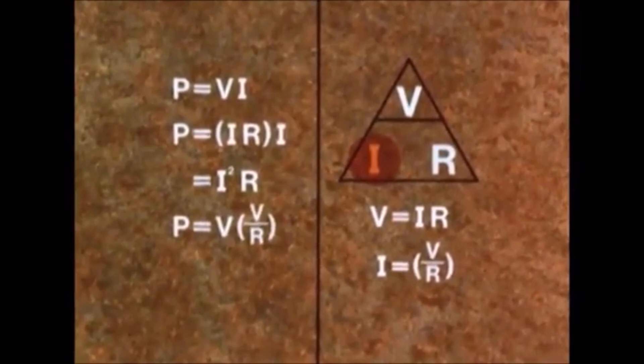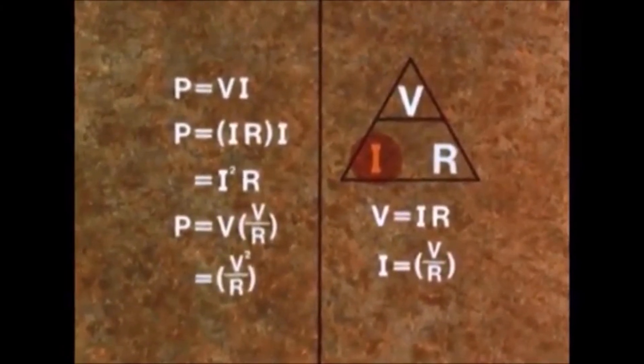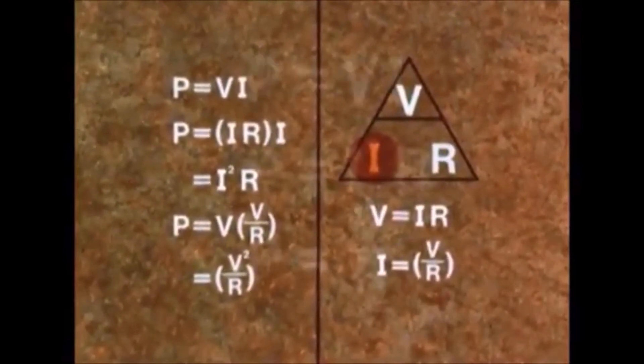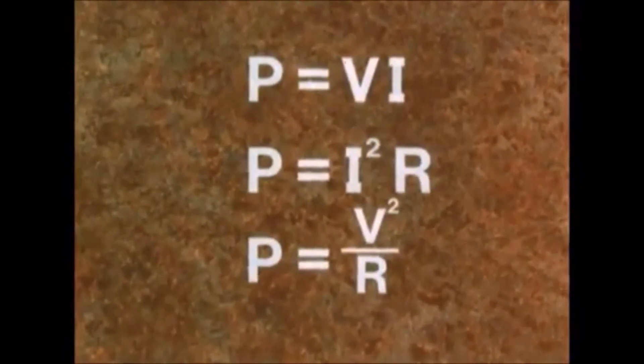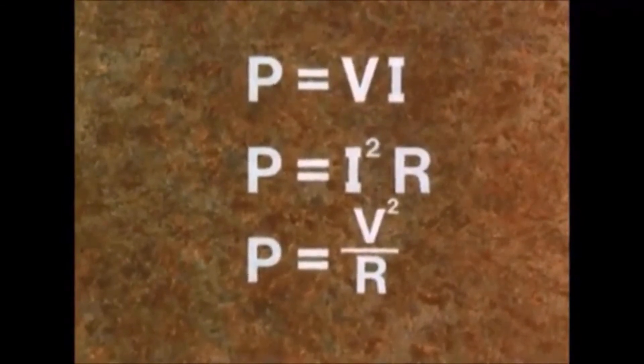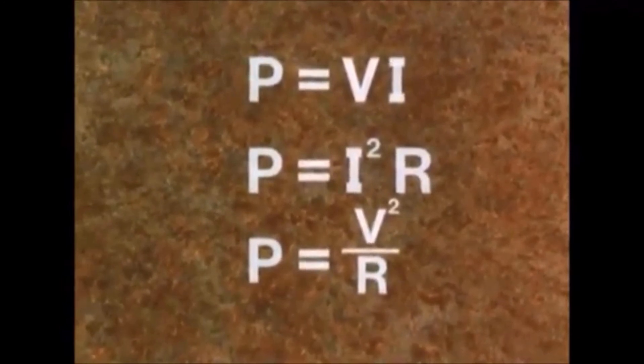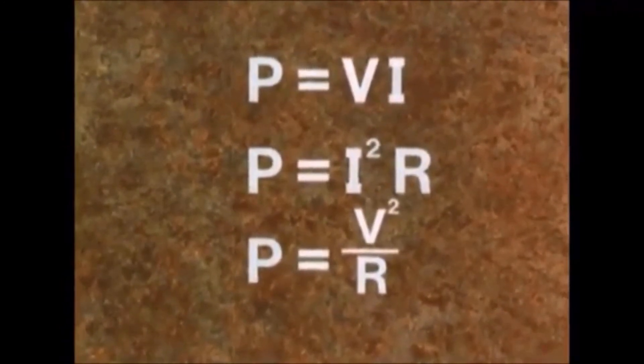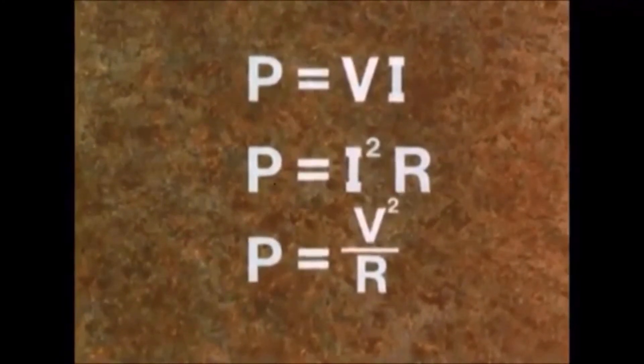Similarly, I equals V over R, and if we put this value for I in the power formula, we get P equals V squared over R. So we have three ways of expressing power: P equals VI, P equals I squared R, and P equals V squared over R. These are all very useful formulae and should be learned by heart.